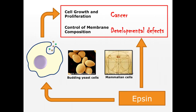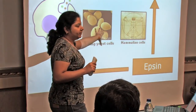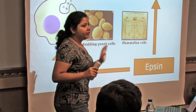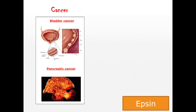We work with both budding yeast cells and mammalian cells. I will not talk about mammalian cells in detail today because my project focuses on the yeast cells. But very briefly, what we have identified is that epsin is important for a number of different human cancers, including bladder cancer and pancreatic cancer.